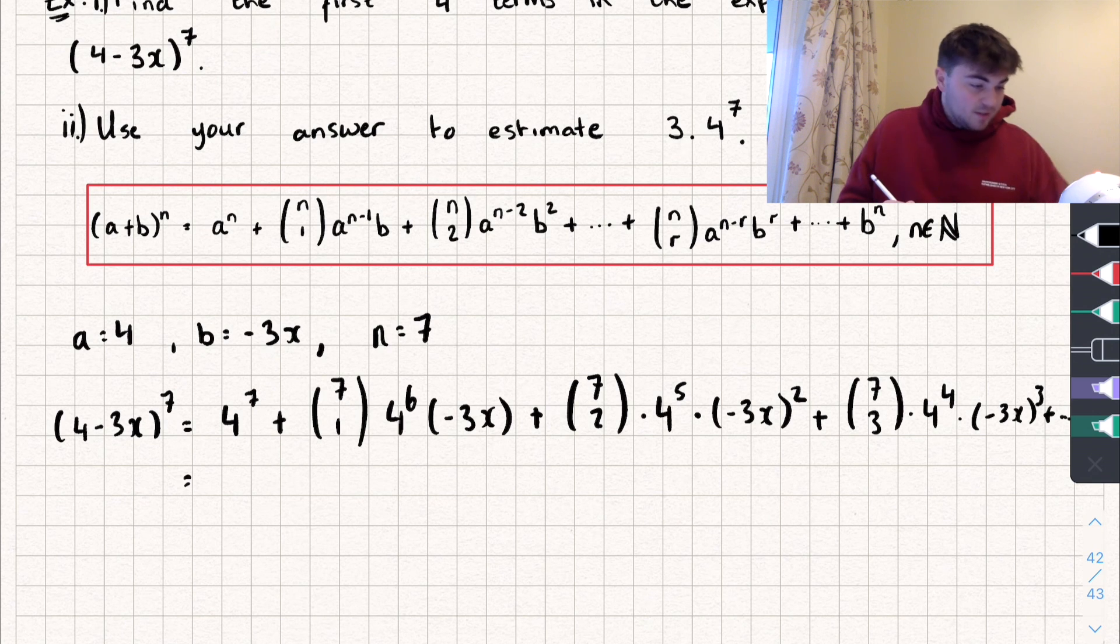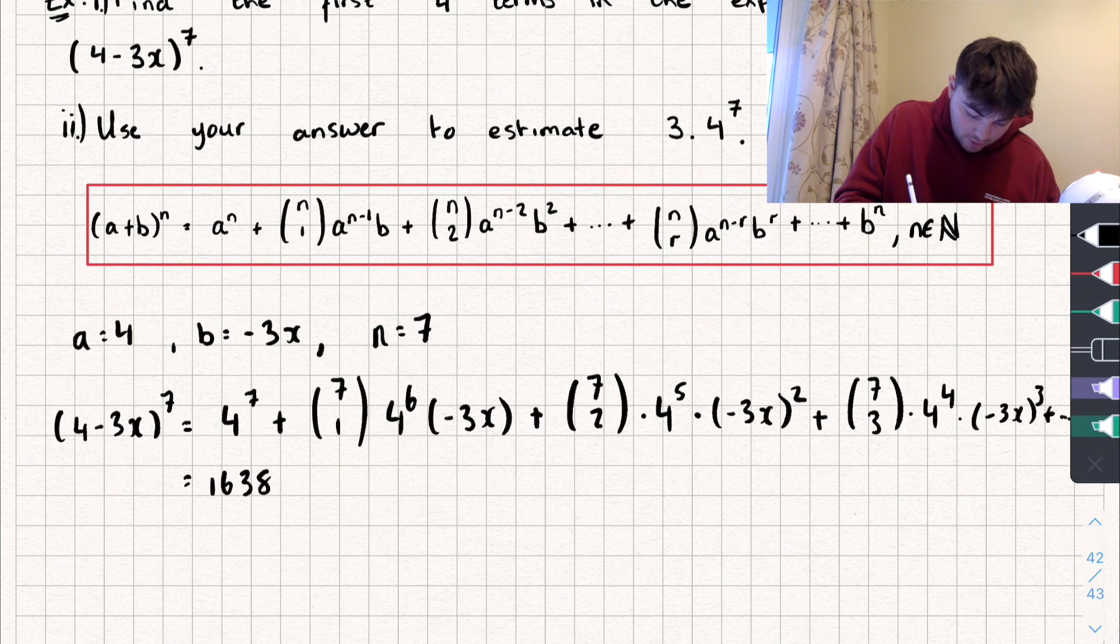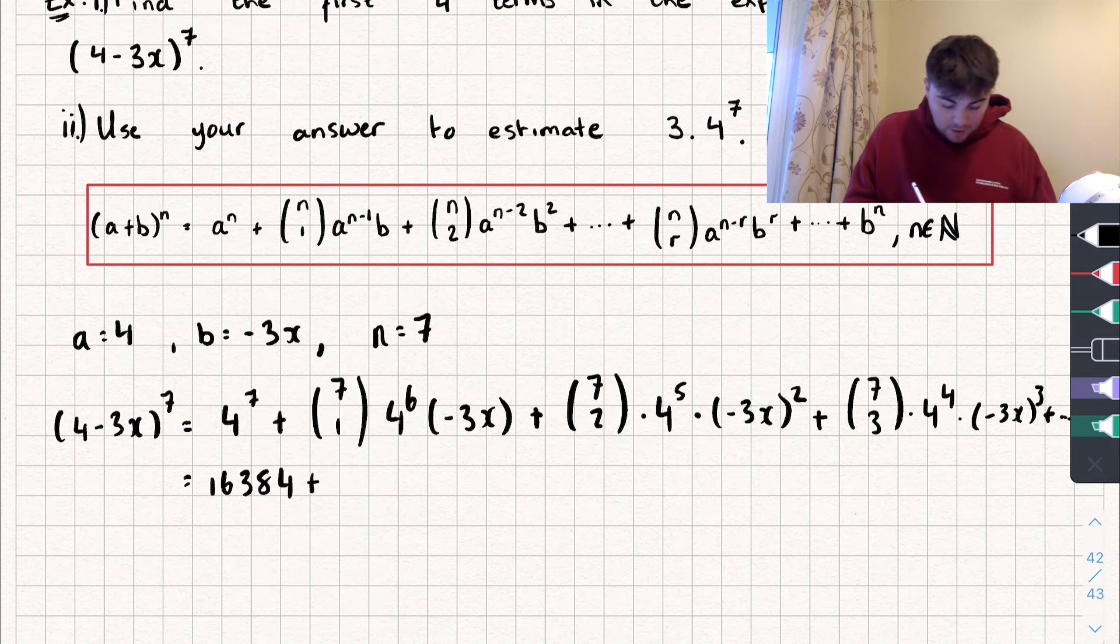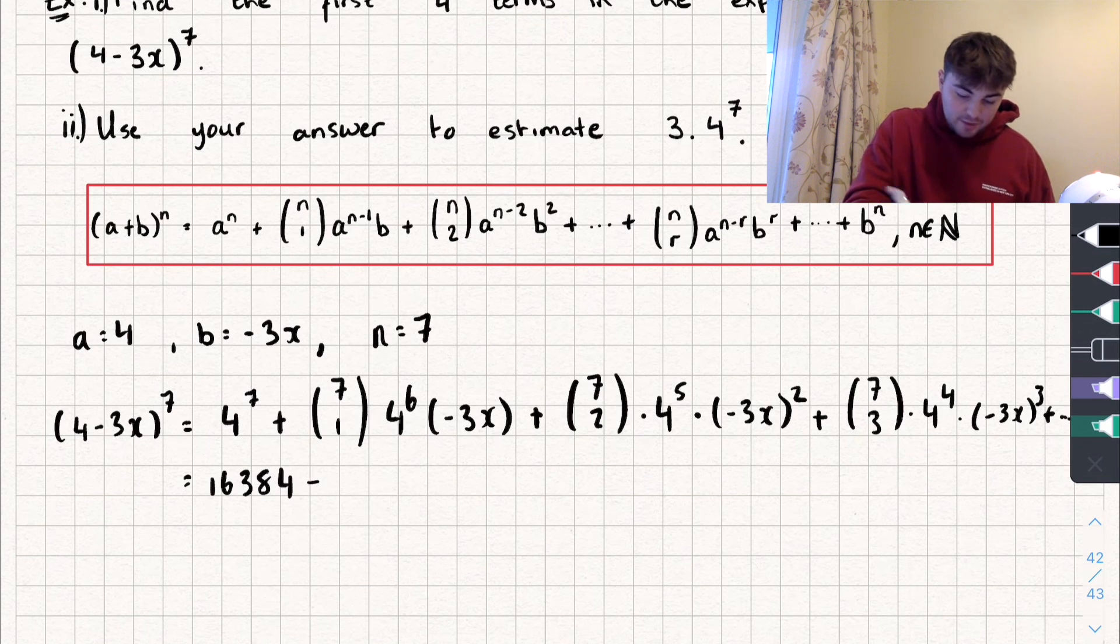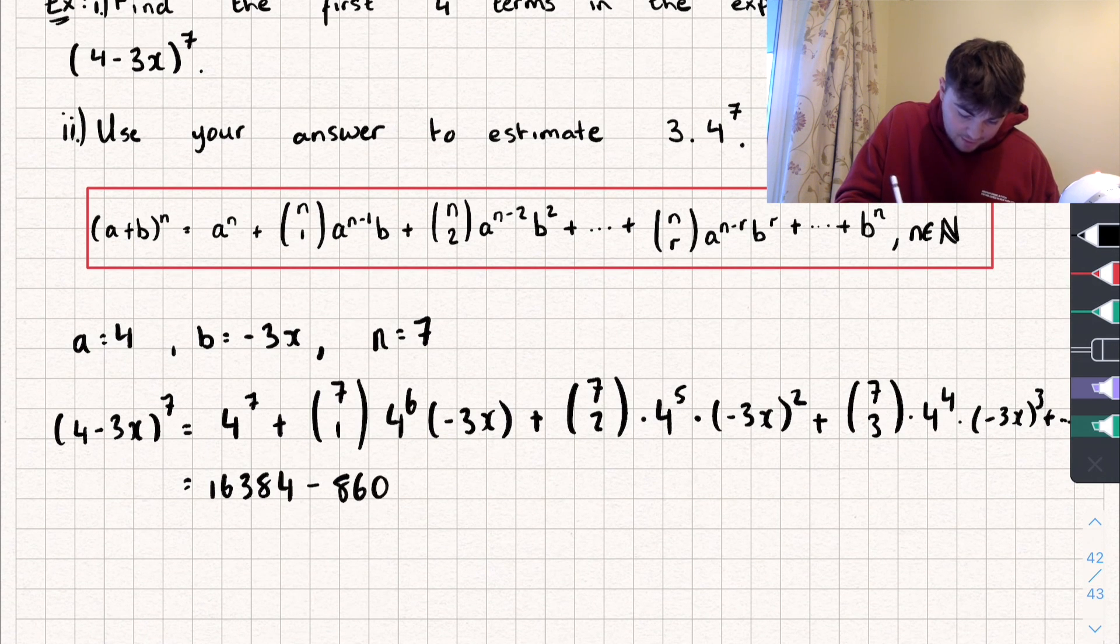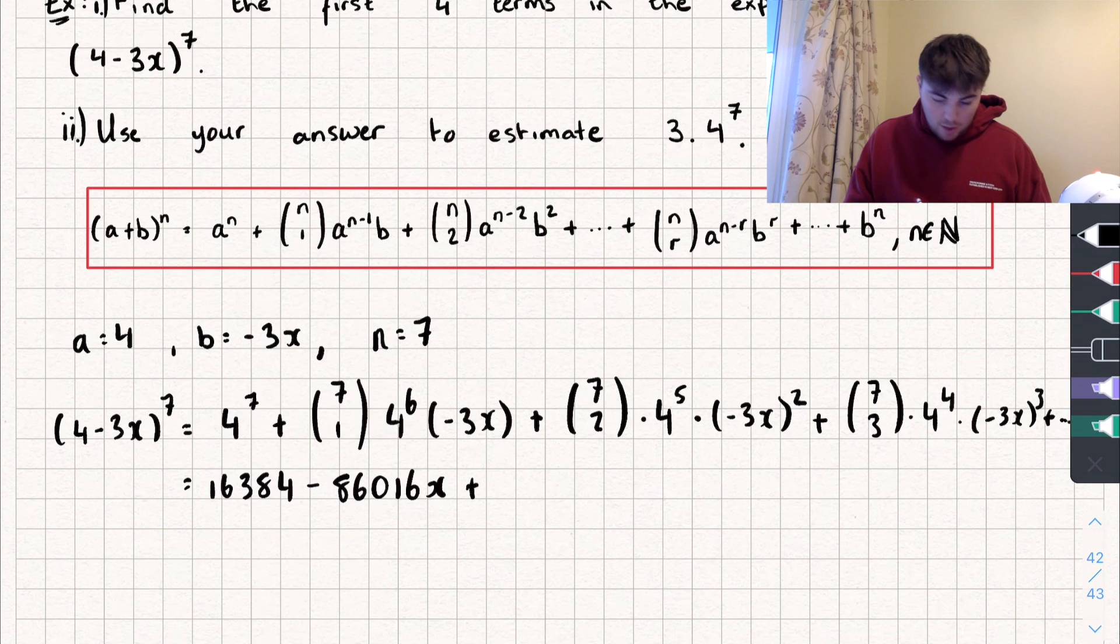And I'm now going to use my calculator to work these out. So we start off with 4 to the power of 7, which gives me 16,384. Plus 7 choose 1, I'm just literally putting this all on my calculator, so 7 choose 1, multiplied by 4 to the power of 6, multiplied by, I'm just going to multiply it by negative 3, and then I can just put an x on the end. So multiplied by negative 3, that gives me an answer of negative 86,016x, don't forget the x.